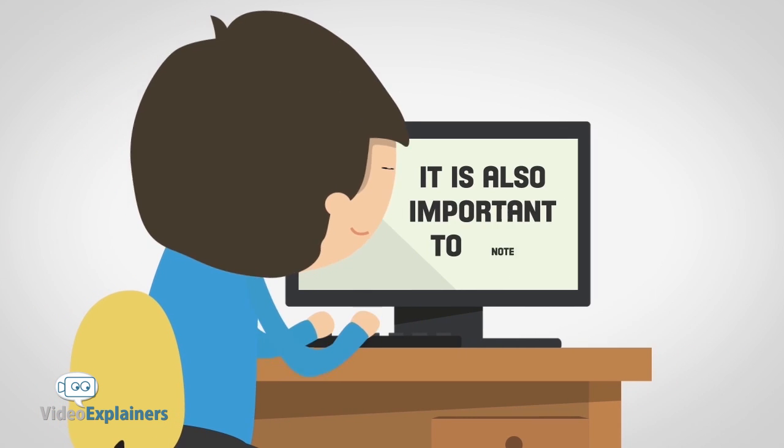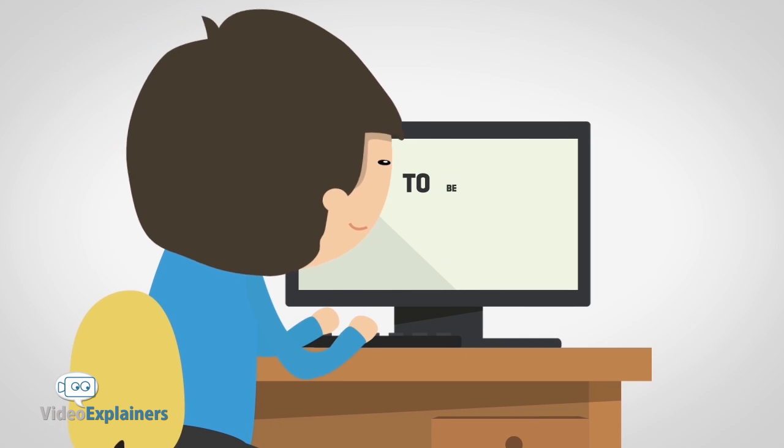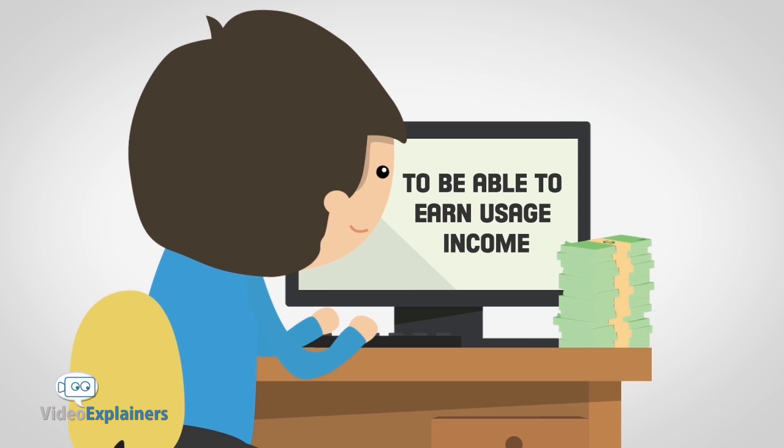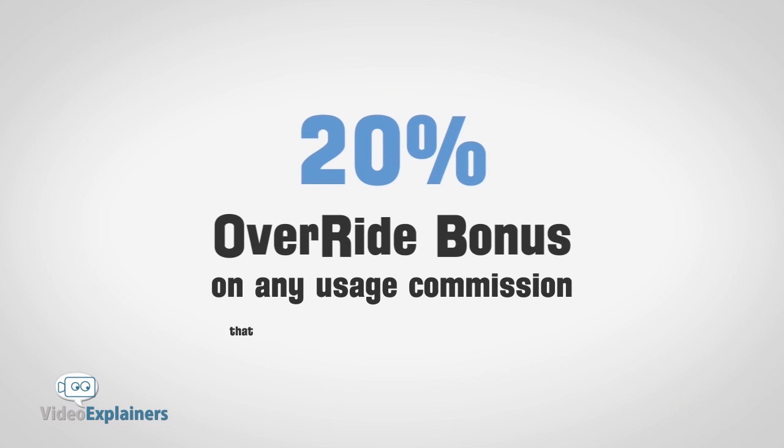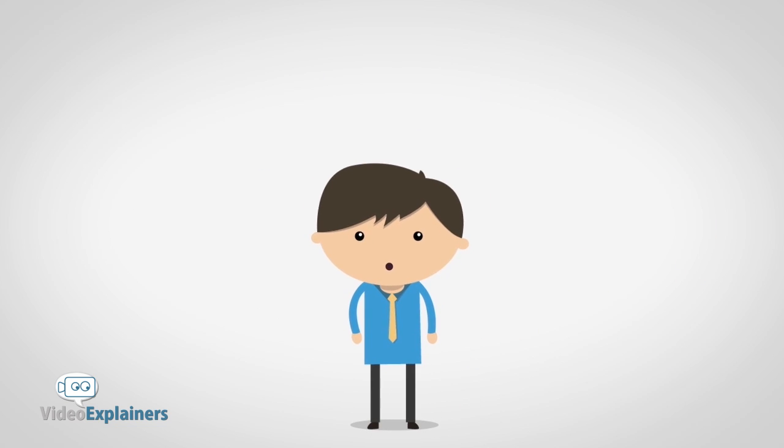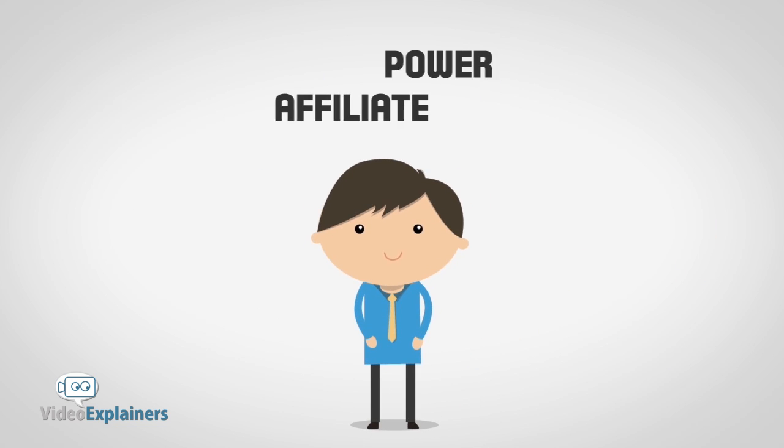It is also important to note that you don't actually have to sell a Sherlock system to be able to earn usage income. You can also earn a 20% override bonus on any usage commissions that your frontline team earns. All you have to do to qualify for this is reach the level of Power Affiliate.